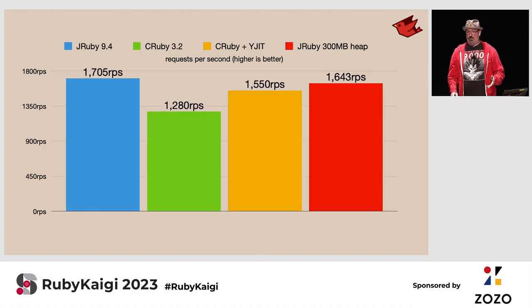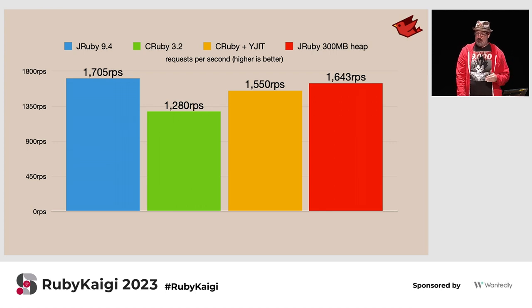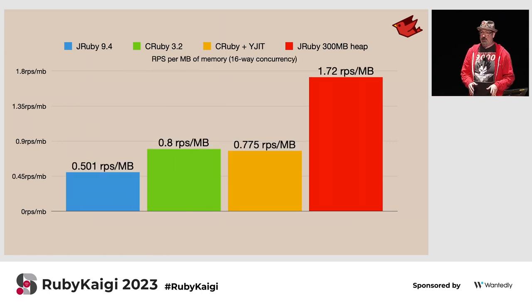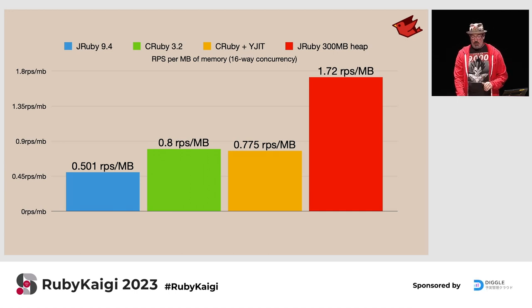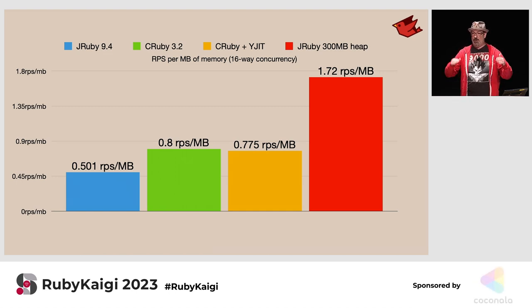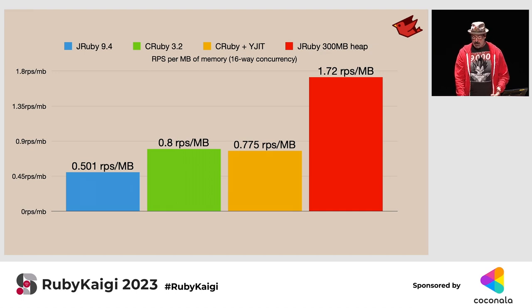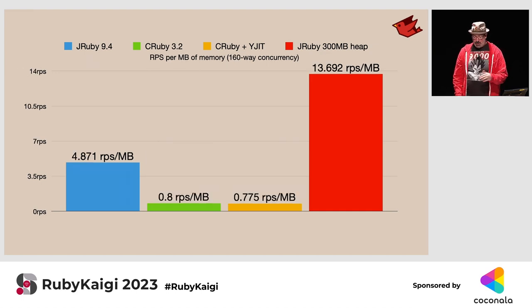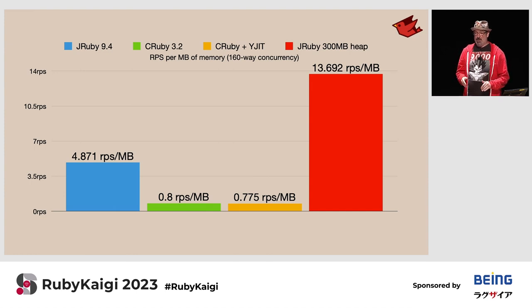With the smaller heap, JRuby's performance drops slightly but not much, and now we're running in a much more comfortable memory footprint — we could run it on a smaller instance and pay less. Looking at requests per second per megabyte of RAM: untuned JRuby at 3.4 GB gets about 0.5 req/s per MB; with tuning JRuby does much better at 1.72 req/s per MB. Scale this up to 160 concurrent users and JRuby does much, much better than CRuby on scaling with the same amount of memory. That translates directly to real money — almost all of your cloud cost is memory, and the more you get out of it, the better.